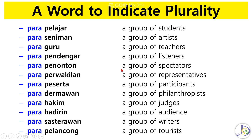Para penonton, a group of spectators — penonton also means audience. Para perwakilan, a group of representatives. Para peserta, a group of participants. Para dermawan, a group of philanthropists. Para hakim, a group of judges. Para hadirin, a group of audience. Para sastrawan, a group of writers. Para pelancong, a group of tourists.